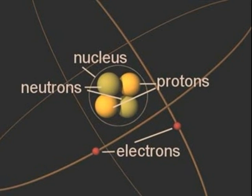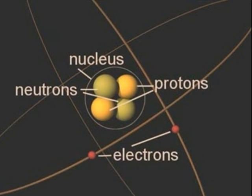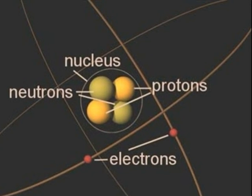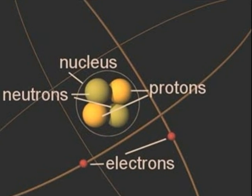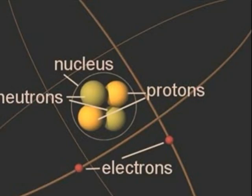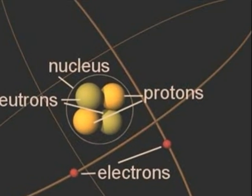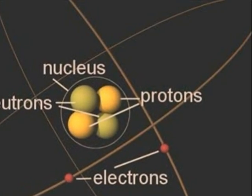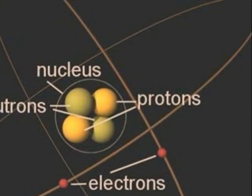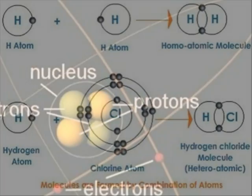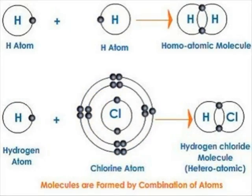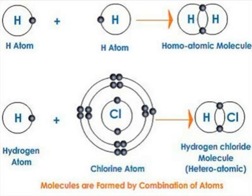Through their own properties, protons, neutrons and electrons — whatever they are made of — come together to form atoms. Atoms, through their attractive and repulsive properties, come together to form molecules.